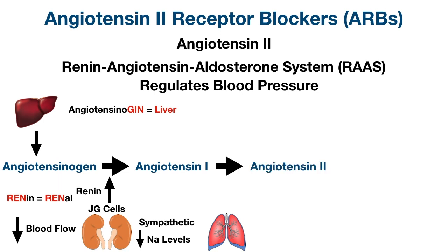However, it's angiotensin 2 that we need, not angiotensin 1. Angiotensin 1 is simply the inactive precursor for angiotensin 2. There's another enzyme primarily located in the endothelium of blood vessels in the lungs called angiotensin converting enzyme, or ACE. When you think of ACE, think of air to help you remember that one of the main locations of ACE is in the lungs. Angiotensin converting enzyme converts angiotensin 1 into angiotensin 2.